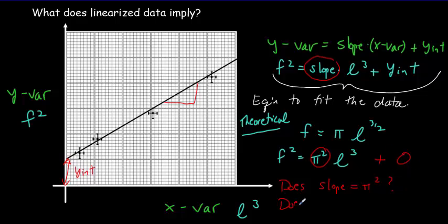So we'd also like to ask, does the y-intercept equal zero? Is it within experimental uncertainty of zero? And that's how we verify this theoretical equation with our experimental data, by seeing if the two are within experimental uncertainty of each other.